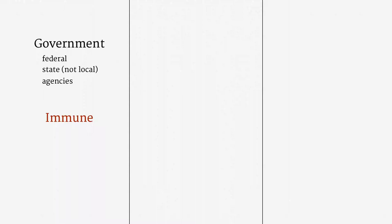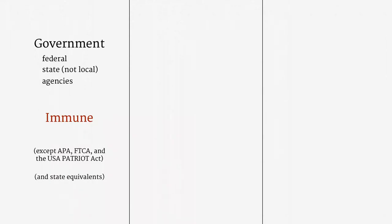The entities in this category are immune from suit as sovereigns. A plaintiff can't get anything unless that immunity has been waived or abrogated. For our purposes, there are three exceptions to note: the United States has expressly waived sovereign immunity under the Administrative Procedure Act, the Federal Tort Claims Act, and the USA Patriot Act. Outside of those areas, a suit against the United States is no good. As for the states, many have enacted waivers of sovereign immunity that parallel the APA and the FTCA. The details vary by state.